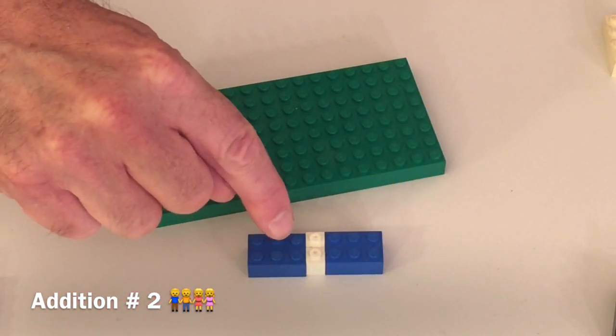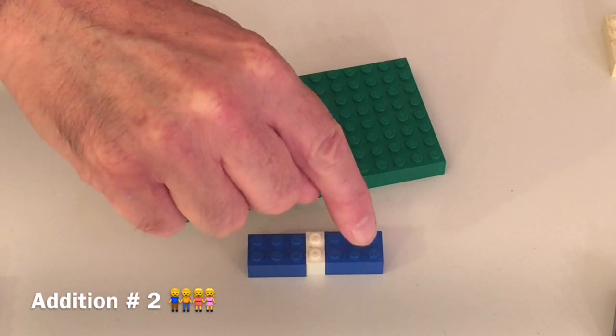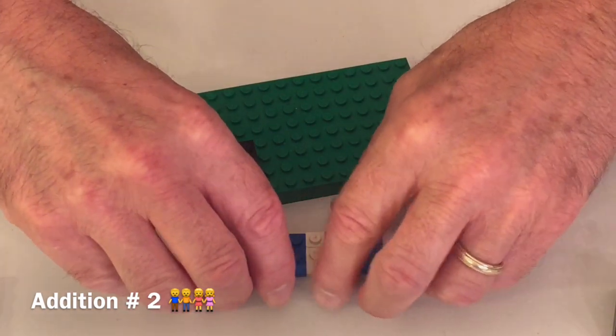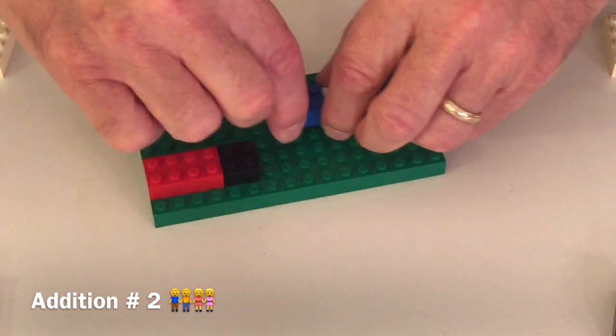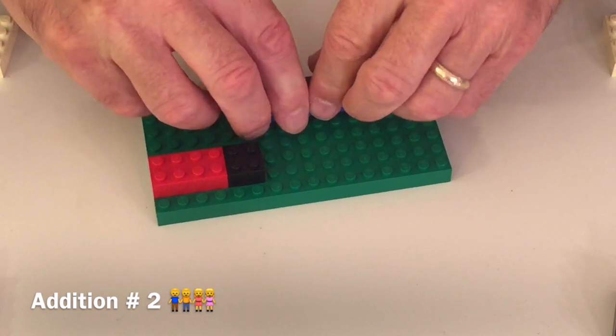One, two, three, four, five, six, seven, eight, nine, ten, eleven, twelve, thirteen, fourteen. Seven plus seven is fourteen. We'll put that up here. That was pretty easy.